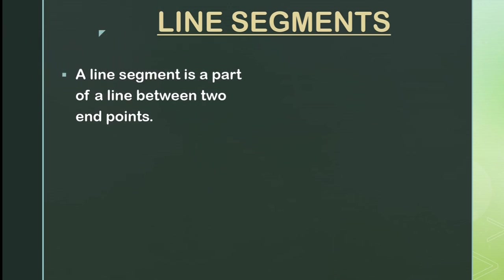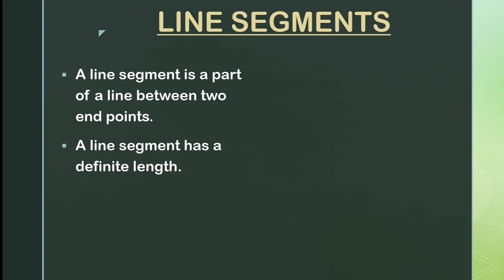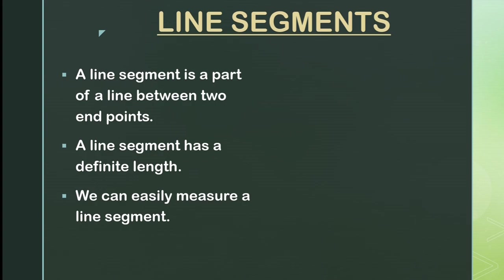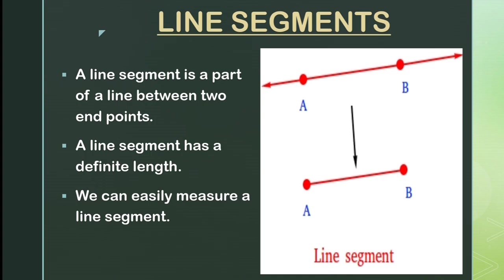A line segment is a part of a line between two end points. A line segment has a definite length. We can easily measure a line segment. As you can see in the given figure, AB is a line segment which is a part of a line, and you can easily measure AB with a measuring scale.